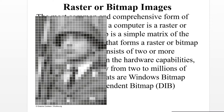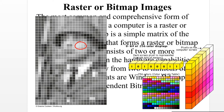Each pixel consists of two or more colors. Depending on the hardware capabilities, each point can display from two to millions of colors. Bitmap formats include Windows Bitmap (BMP) and Device Independent Bitmap (DIB).